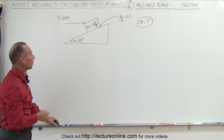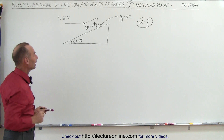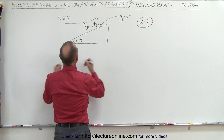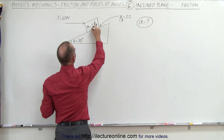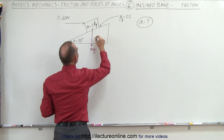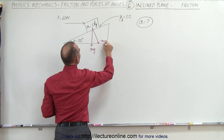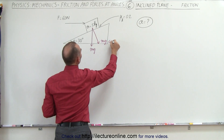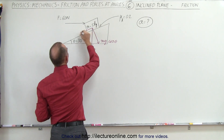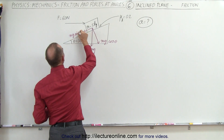We start out exactly the same way. We're going to identify all the forces acting on the block. We have the force of gravity pulling down, which is equal to mg. That means we have a perpendicular component, which is mg cosine of theta, and we have a horizontal component, mg times the sine of theta.